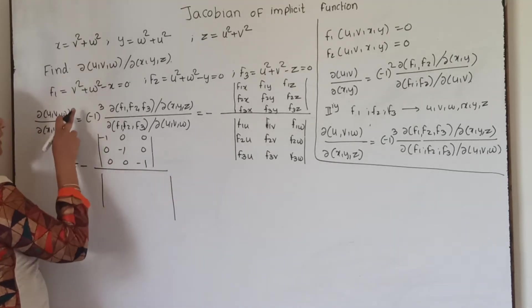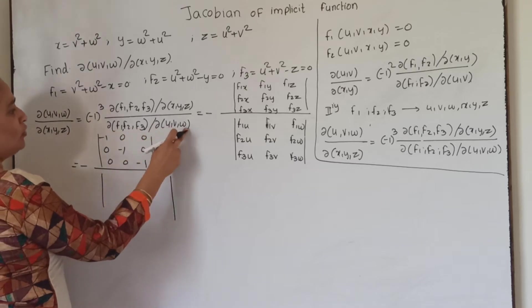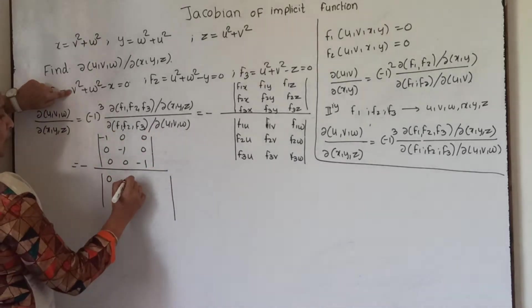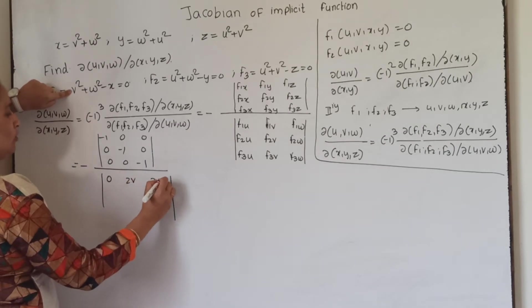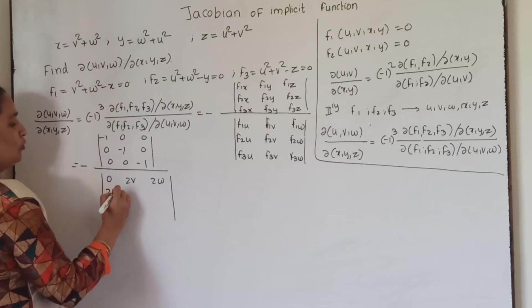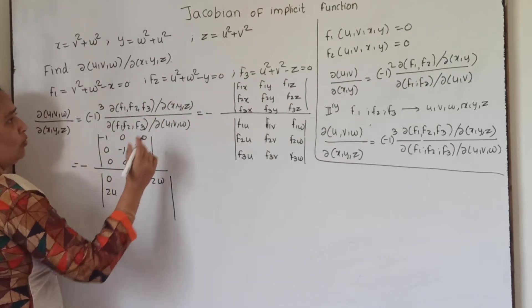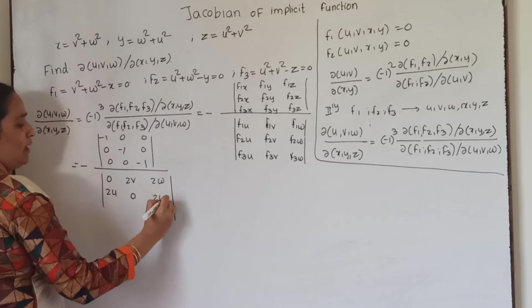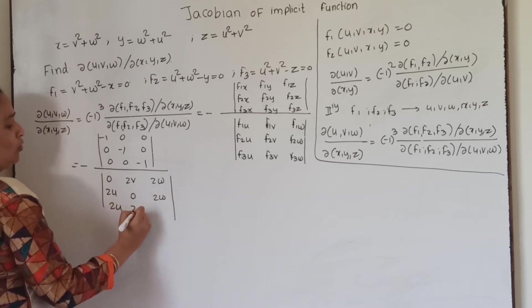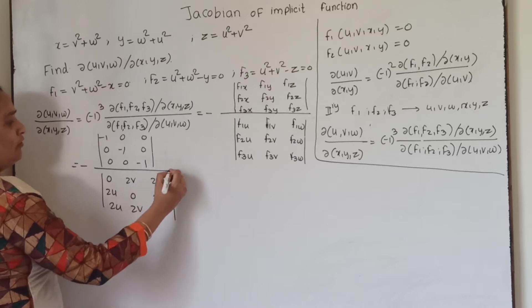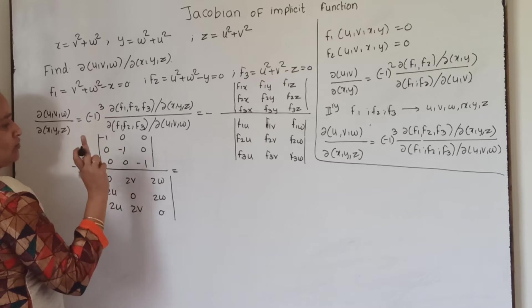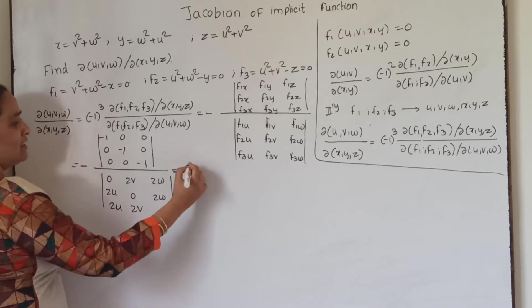In the denominator, we have: ∂f1/∂u = 0, ∂f1/∂v = 2v, ∂f1/∂w = 2w; ∂f2/∂u = 2u, ∂f2/∂v = 0, ∂f2/∂w = 2w; ∂f3/∂u = 2u, ∂f3/∂v = 2v, ∂f3/∂w = 0. Expanding the numerator determinant: minus 1 times minus 1 times minus 1 gives minus 1, and with the outside minus sign the numerator equals 1.